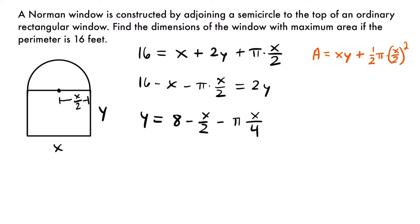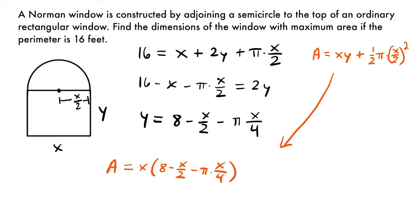Now that we know what y equals, we can plug this into our area equation so it's expressed entirely in terms of one variable, x. Then we'll be able to take the derivative. Substituting y gives: A = x·(8 − x/2 − π·x/4) + (1/2)·π·(x/2)², where (x/2)² = x²/4. Before taking the derivative, let's simplify a little.